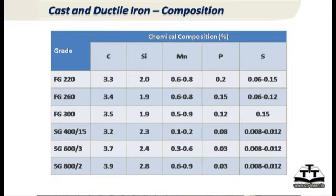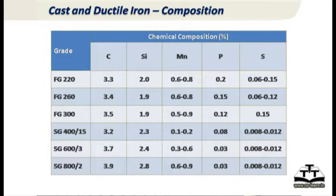For cast and ductile iron, several phases exist depending on composition and strength. Grey iron is designated as FG, where the number — for example 220, 260, or 300 — refers to the tensile strength in megapascals. For ductile iron, or HG iron, grades include 400, 600, and 800 MPa, among many others. Ductile iron has much higher strength than grey iron.